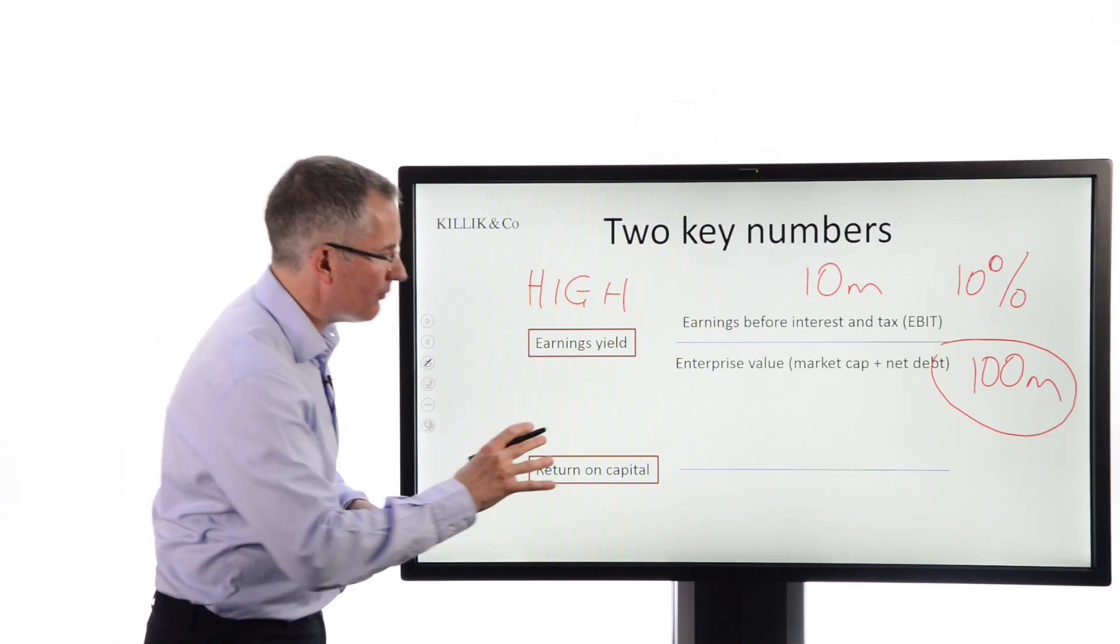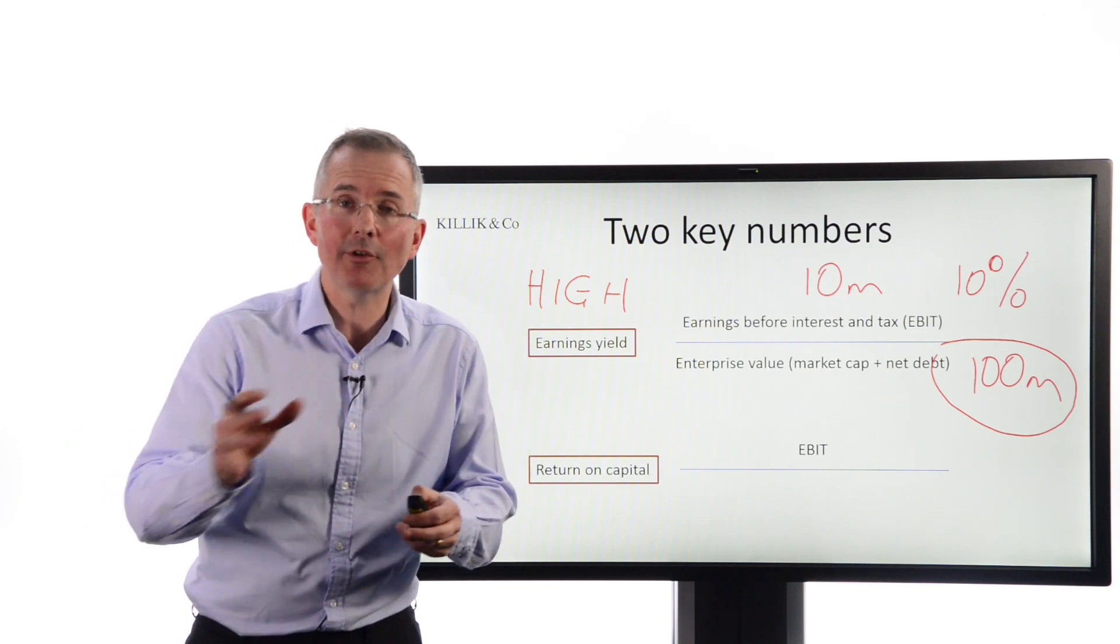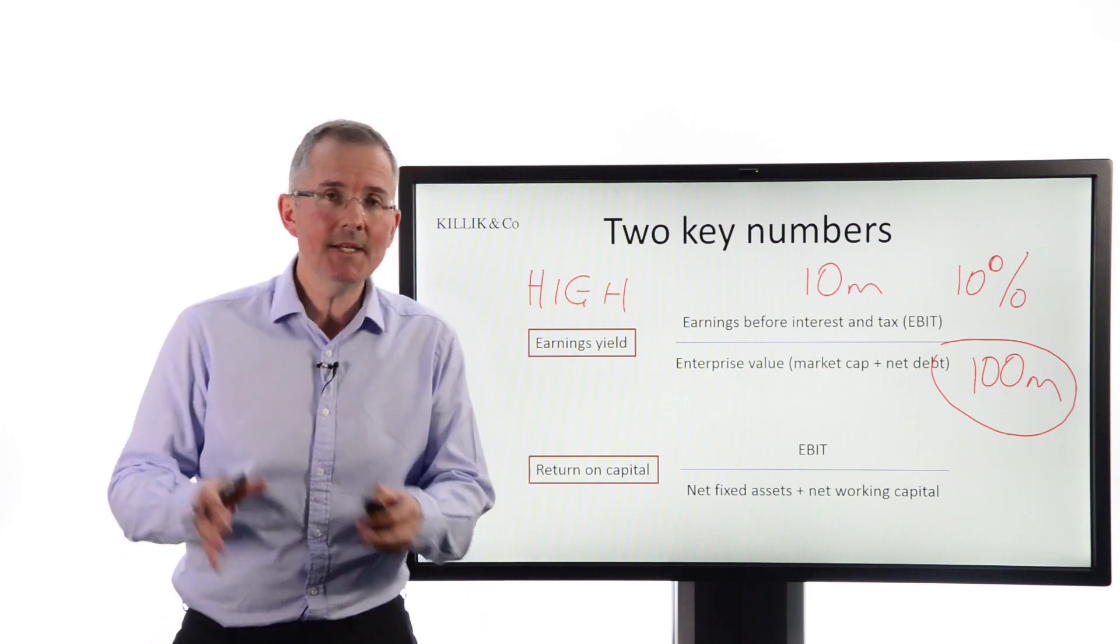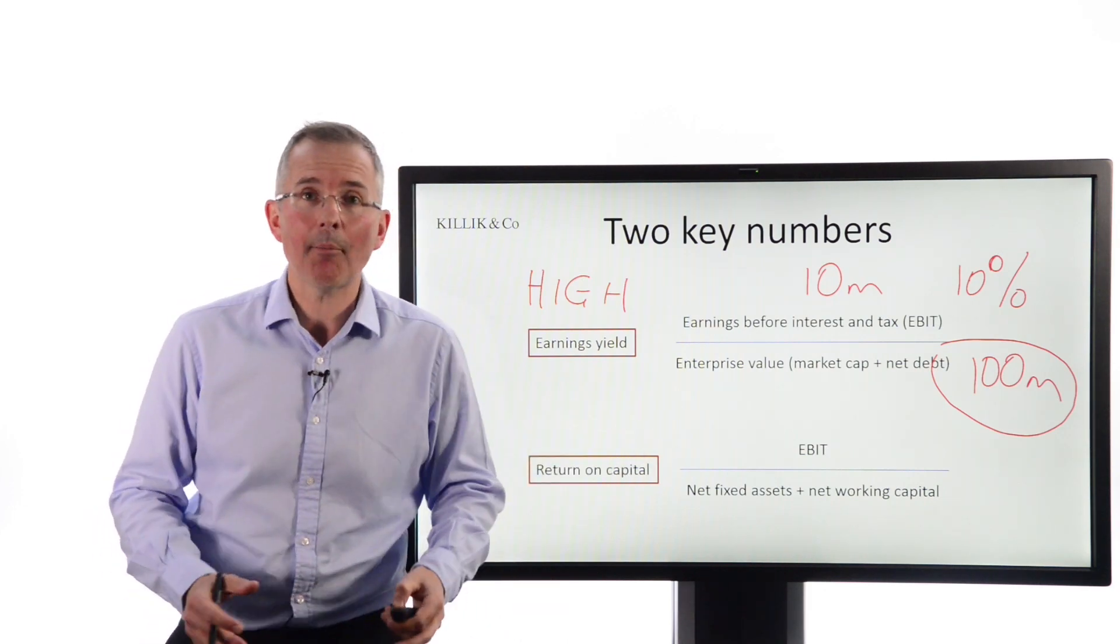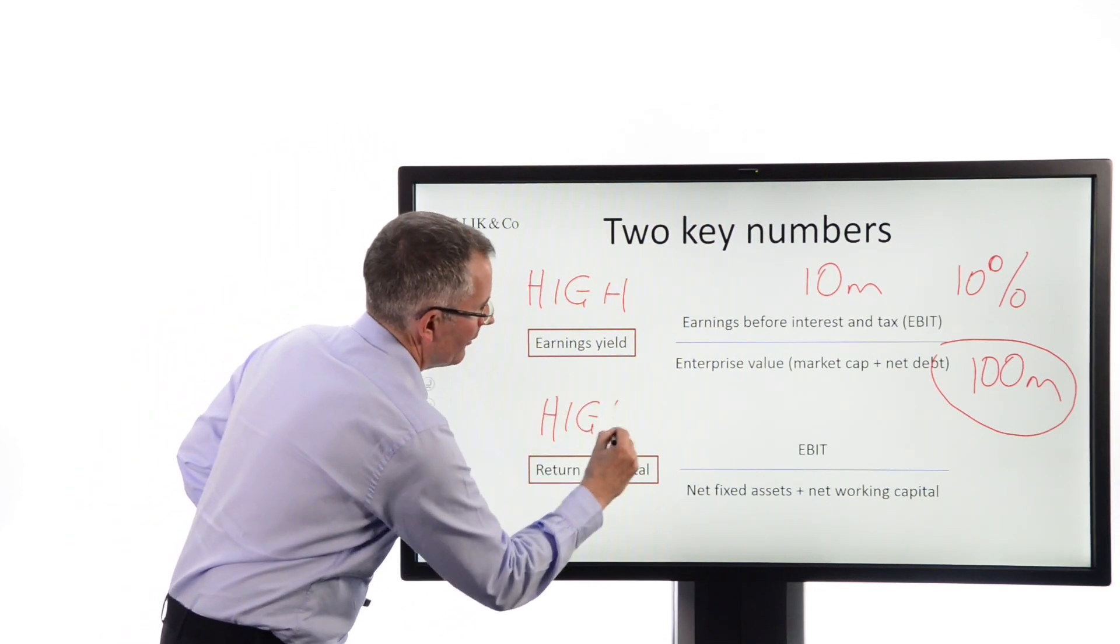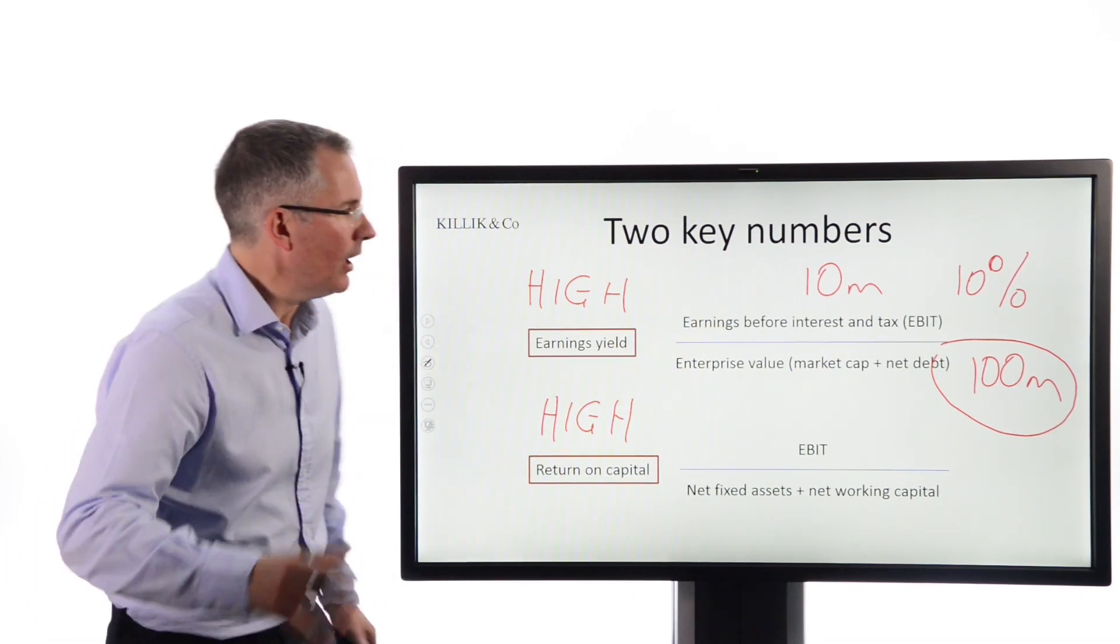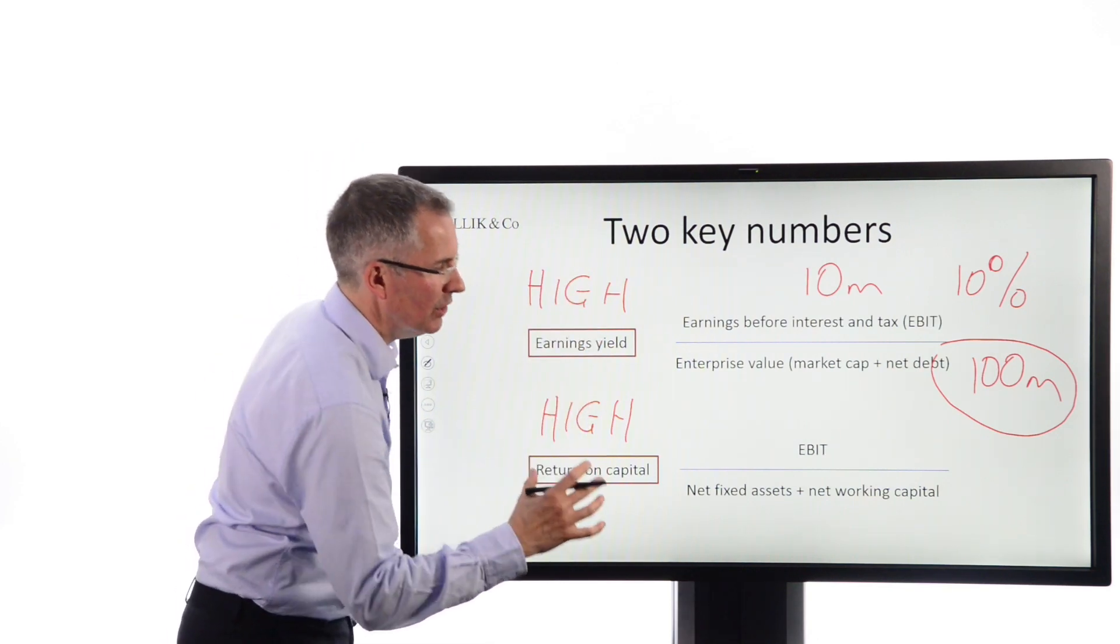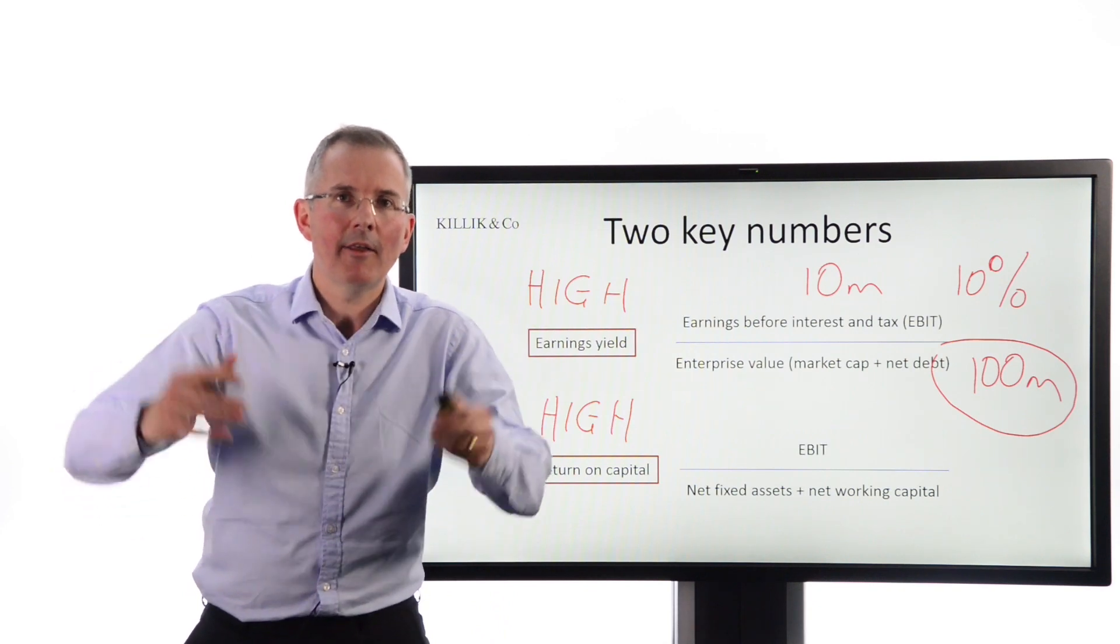Second number, return on capital, defined by Greenblatt as EBIT again, earnings before interest and tax. That's profit before interest and tax over net fixed assets, his definition of balance sheet worth, plus net working capital. So the value of the business. And again, he said the key is to find businesses with high return on capital. So to go back to the basic principles, you are looking for businesses that are cheap, but growing, but generating returns on capital. And if you can find them, there you go. Bingo.